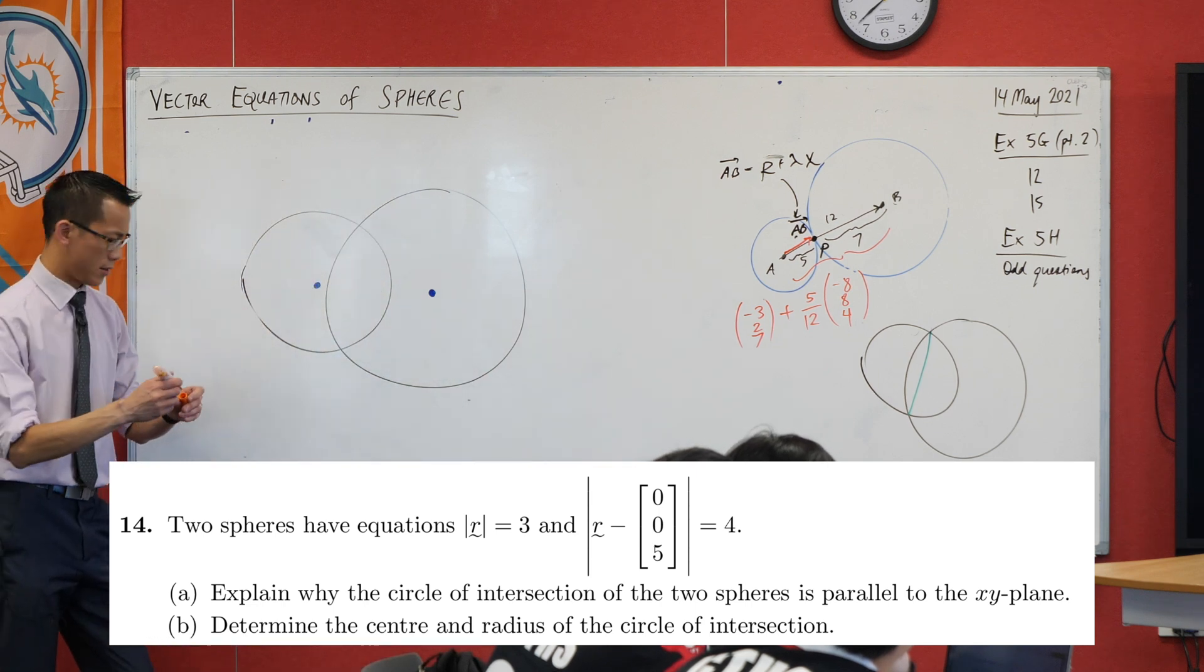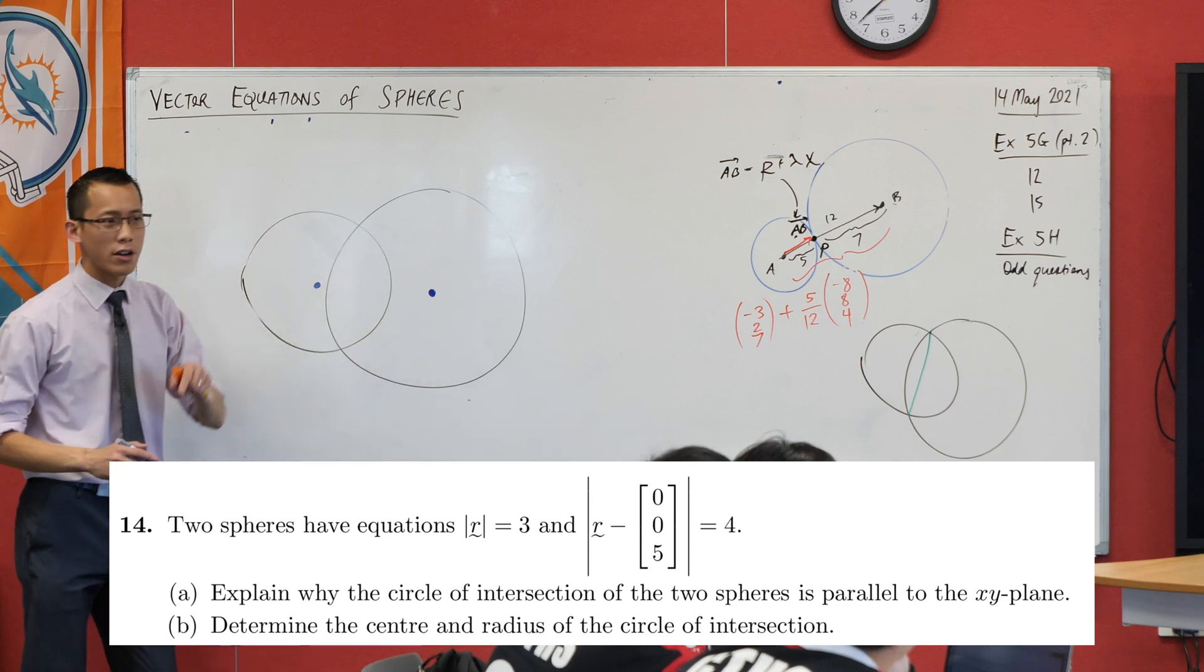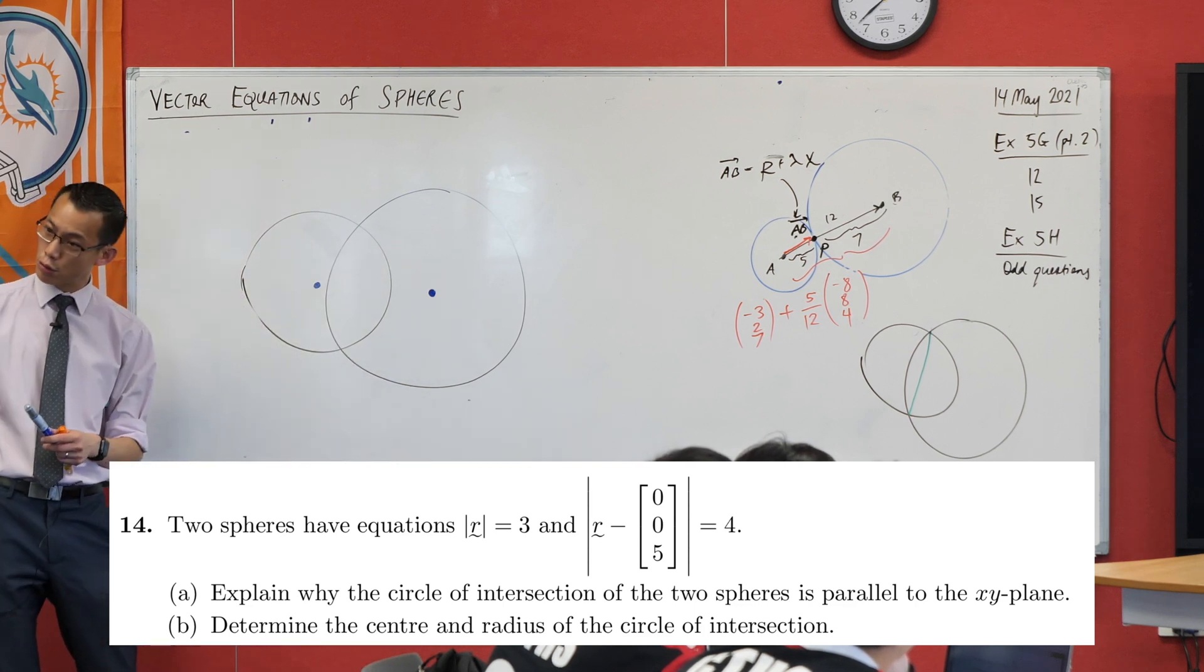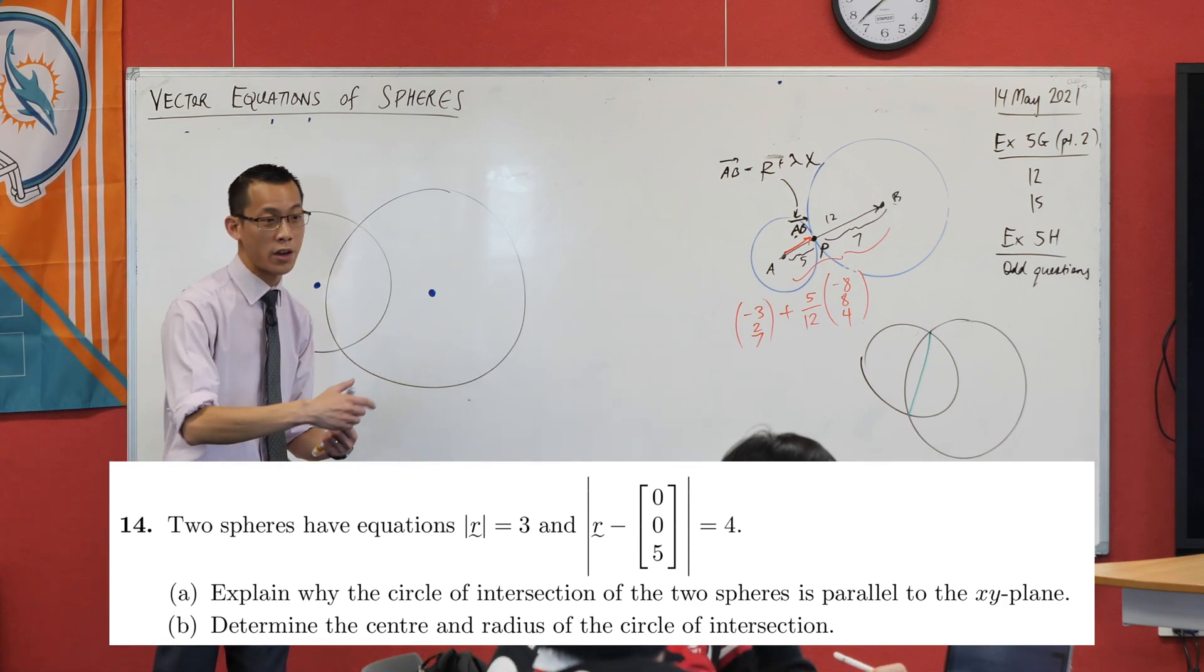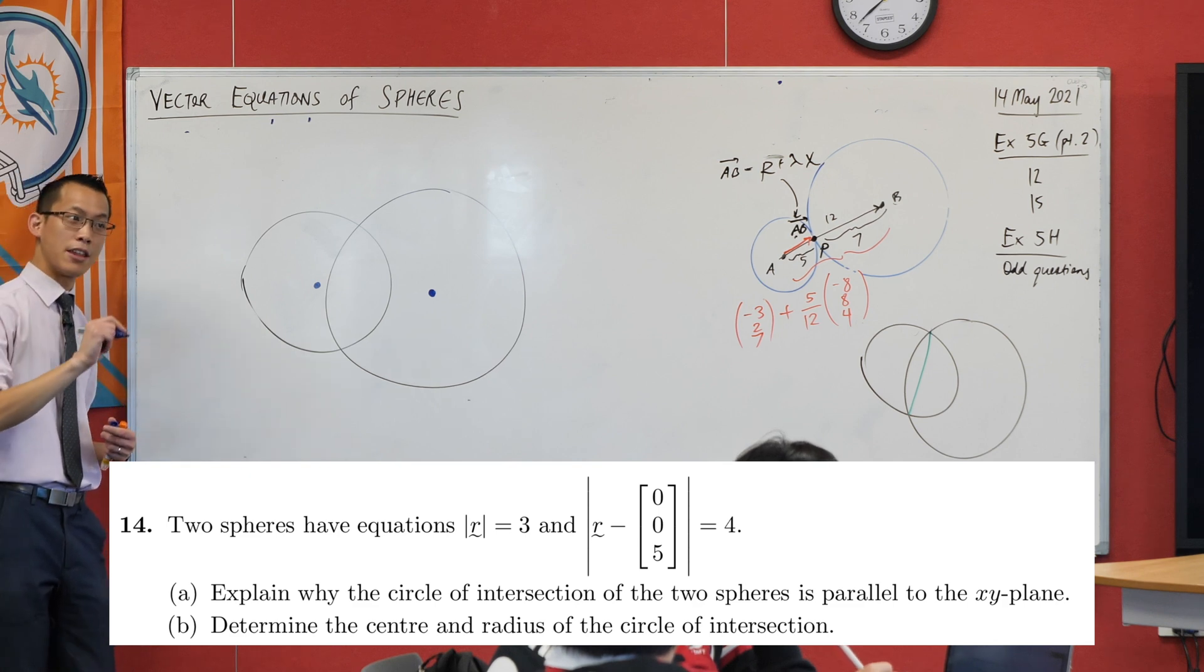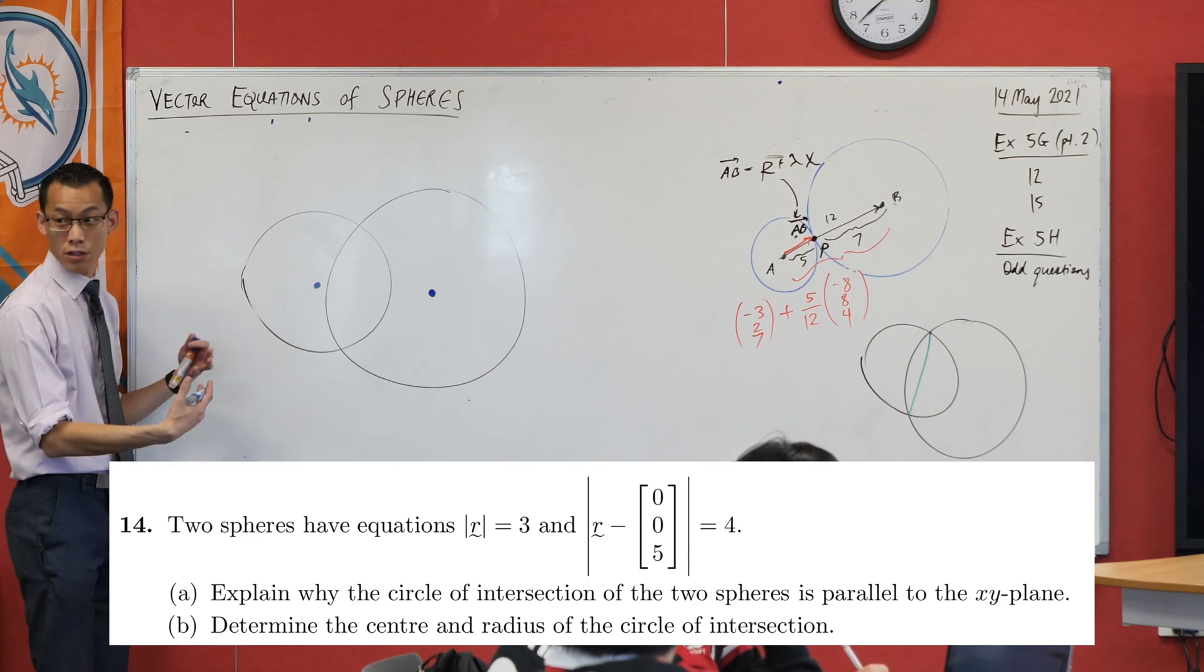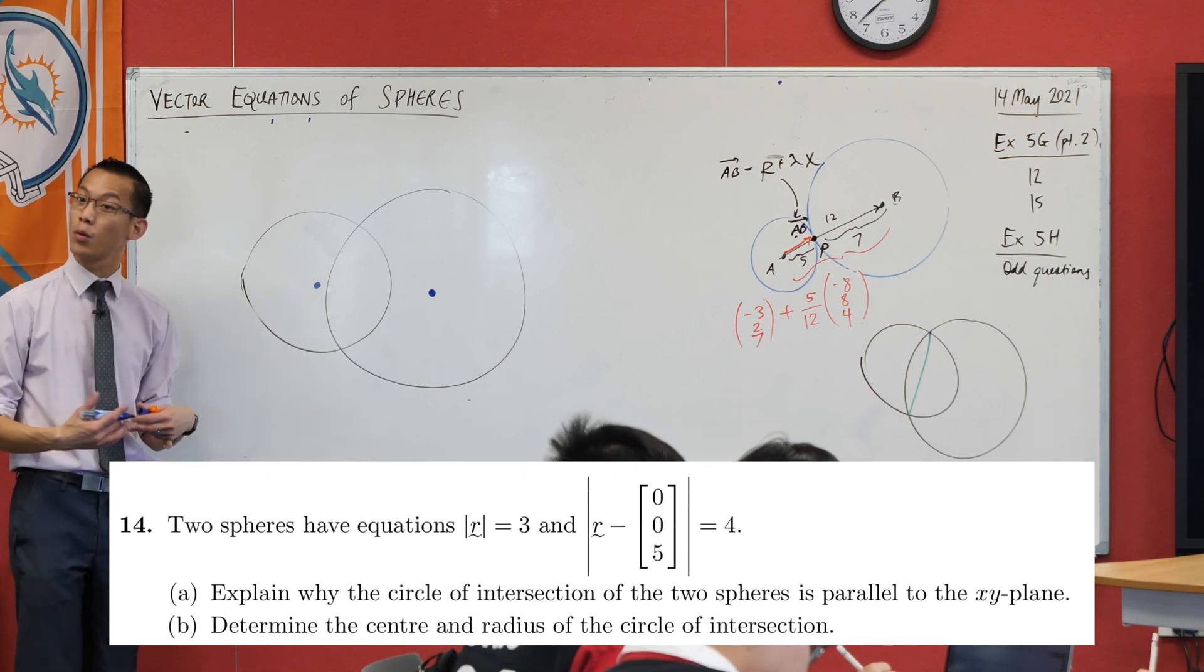I know a few things about these two spheres. From their equations, I can read off two key pieces of information, the two pieces that define every sphere. I can tell the center and the radius. If you haven't drawn a diagram yet, go ahead and draw one.